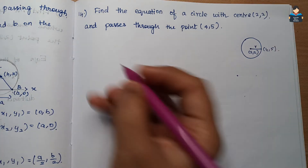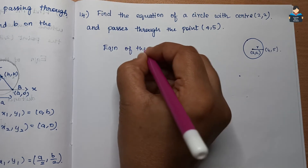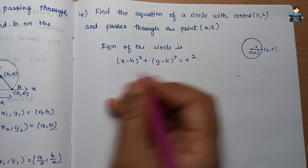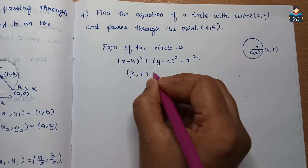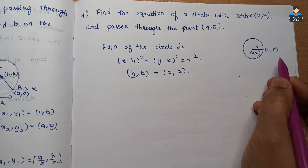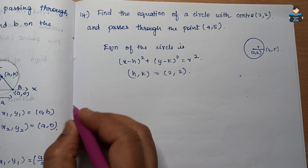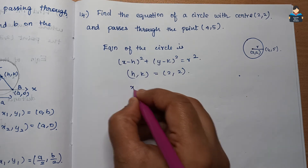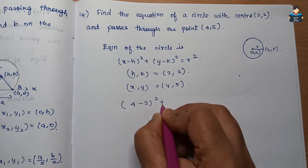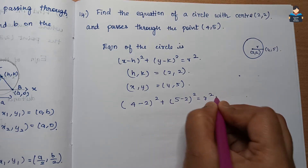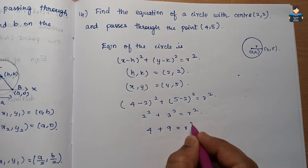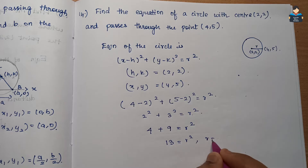The radius of the circle will be found using the standard equation of the circle: (x - h)² + (y - k)² = r². The center value h,k is equal to (2,2), and the circle passes through the point (4,5), so substituting satisfies the equation, giving r² = 13, and r = √13.